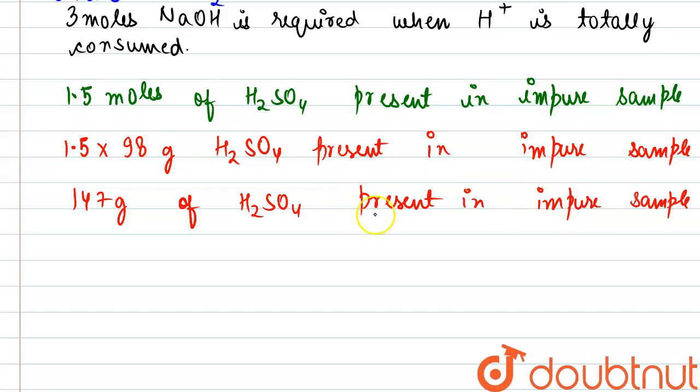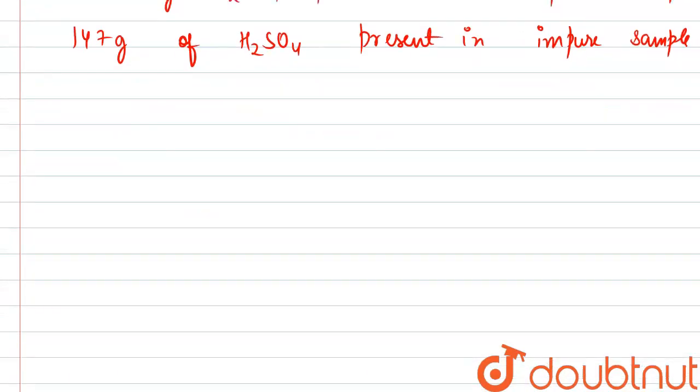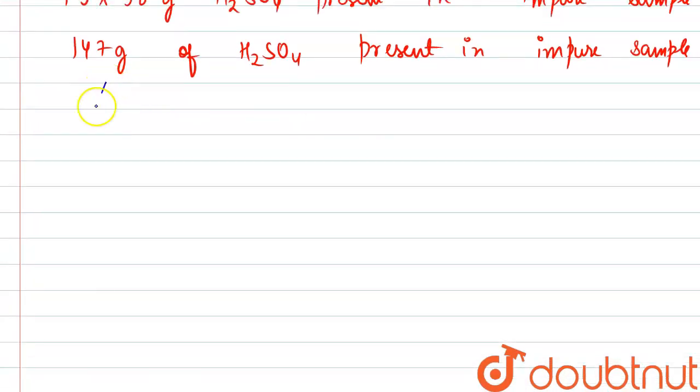We are also provided with the mass. If we check in the question, what is the weight given to us? 183.75 gram of impure sulfuric acid. So now from here we can directly find the percentage purity.